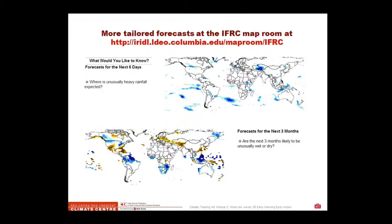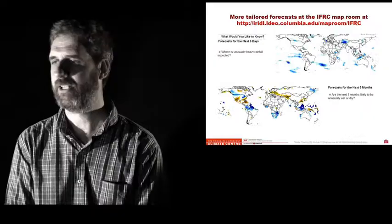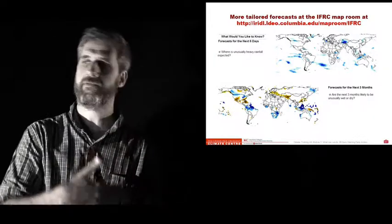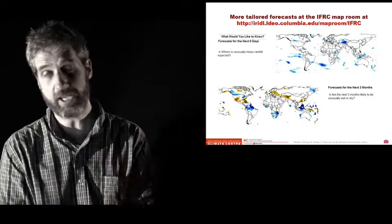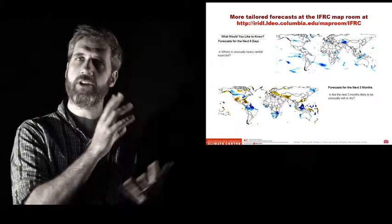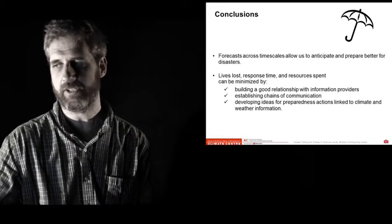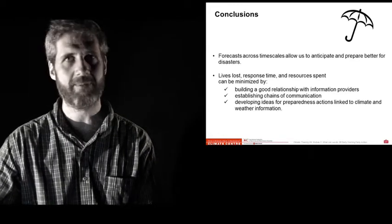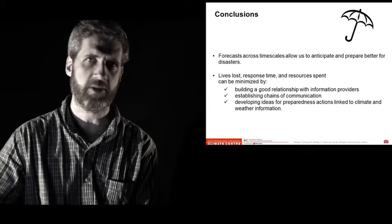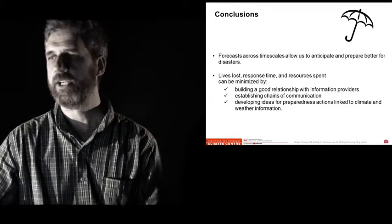If you want more information about this approach, one good place to start is to become familiar with the IFRC Map Room. This was done in collaboration between IFRC, the Climate Center, and our dear colleagues at IRI, a climate and society team at Columbia University. There is a website that shows forecasts for the coming six days, for the coming seasons. There's different choices in that website and there are also teams that can help you understand how to use it. There's even a help desk that you can send an email to to ask any questions and your email will be answered pretty much consistently within 24 hours.